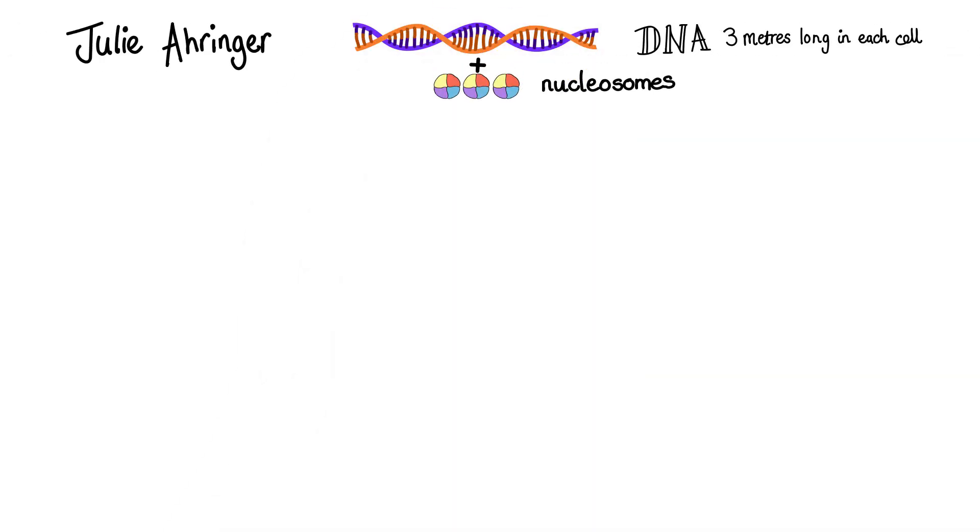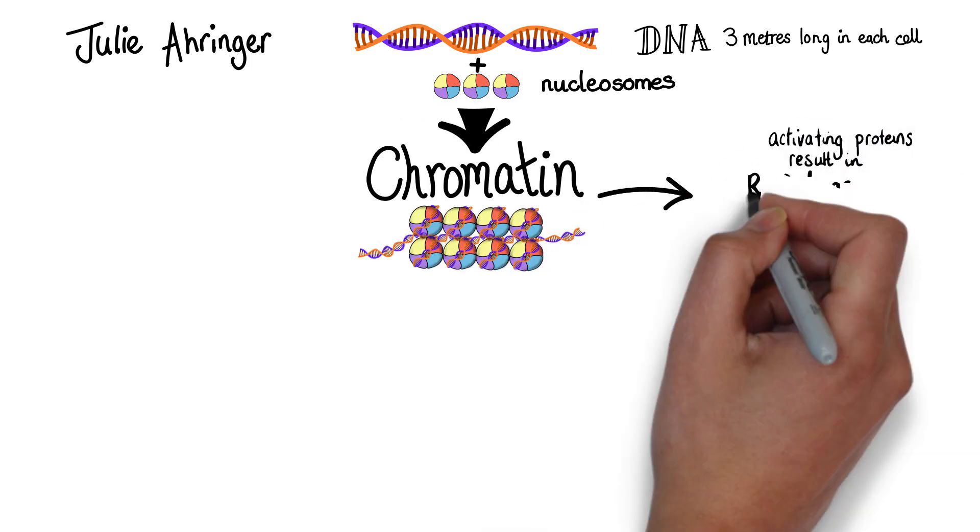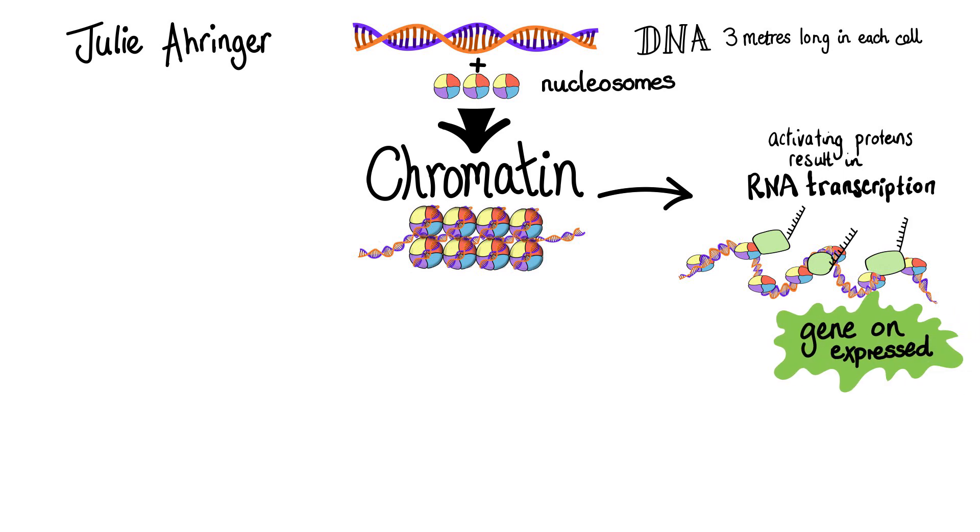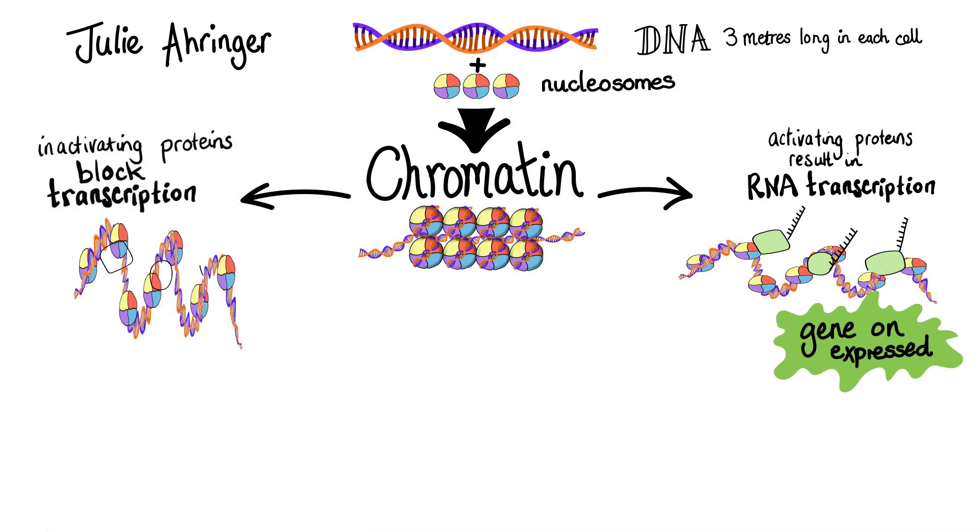In the nucleus, DNA is wound around nucleosomes to make chromatin. Activating chromatin proteins turn genes on by binding to the gene's DNA. To turn a gene off, different proteins bind, often making the packaging tighter.